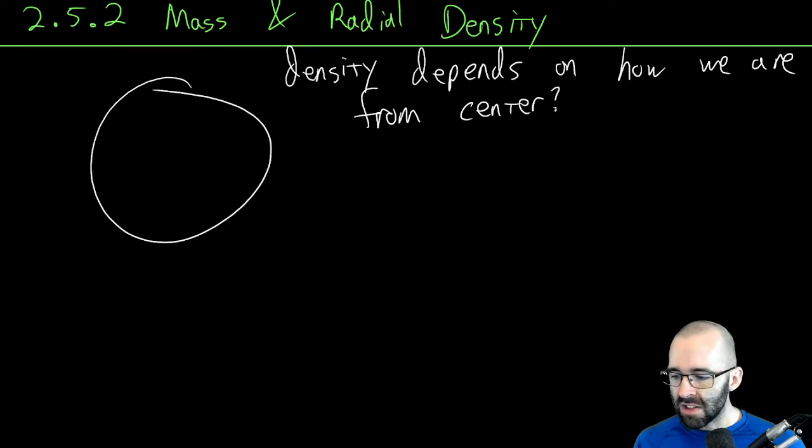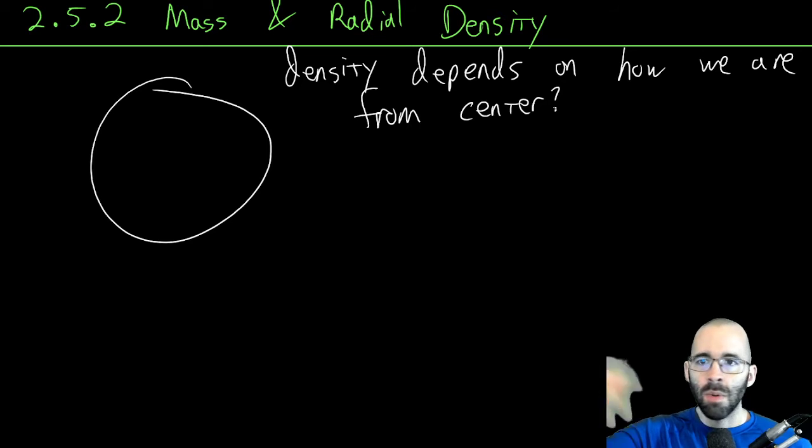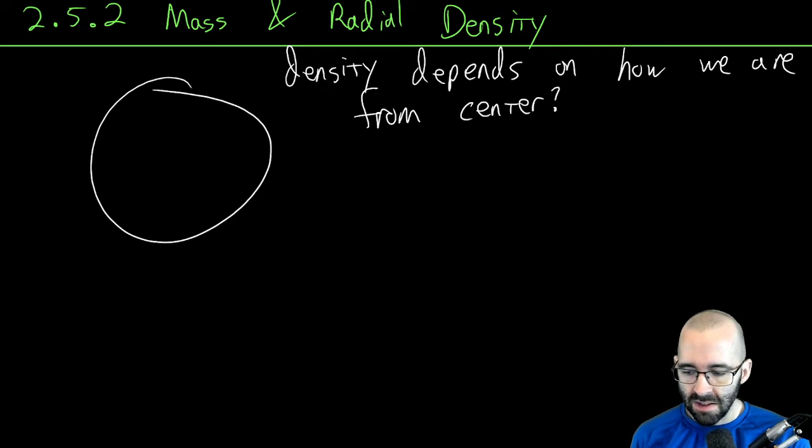These are the two examples we're doing: linear density and radial density. But really you can do all sorts of kinds of densities, all different shapes, kind of the same thing.